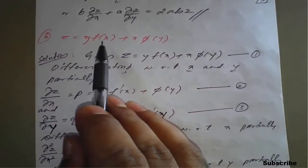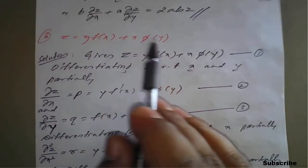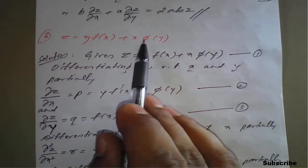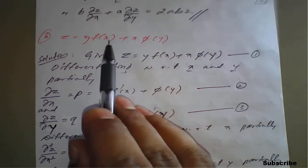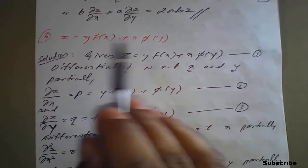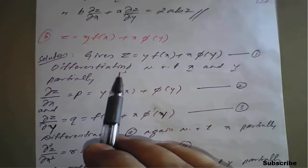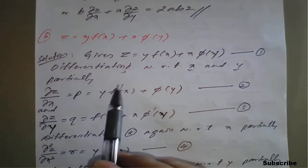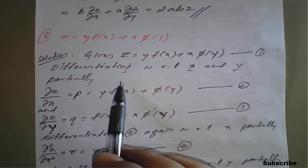Z is equal to y times f of x plus x into phi of y. Here we have two functions, f and phi. In this case, if two functions are there, we need to go for first differentiation with respect to x and y partially, as well as second differentiation with respect to x and y partially.